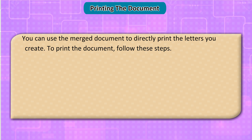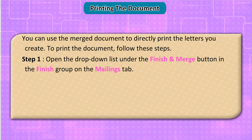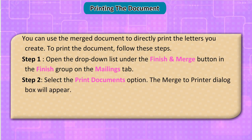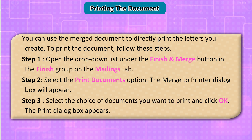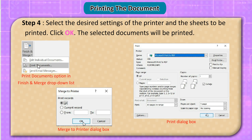Printing the document: you can use the merge document to directly print the letters you create. To print the document, follow these steps. Step 1: open the drop-down list under the Finish and Merge button in the Finish group on the Mailings tab. Step 2: select the Print Documents option. The Merge to Printer dialog box appears. Step 3: select the choice of documents you want to print and click OK. The Print dialog box appears. Step 4: select the desired printer settings and sheets to be printed, then click OK. The selected documents will be printed.